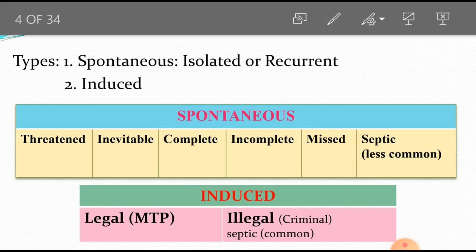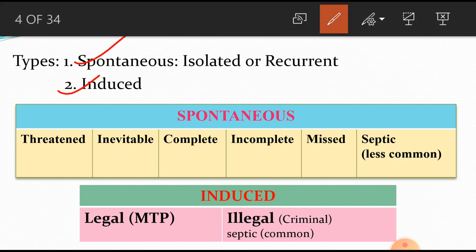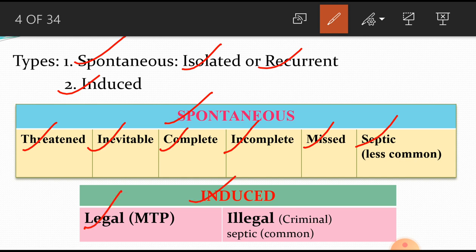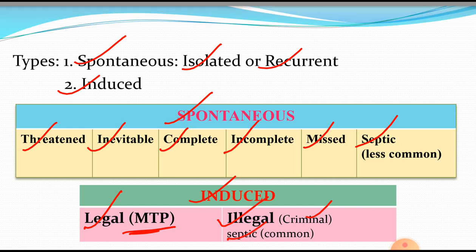Types of abortion: two types are spontaneous abortion and induced. Spontaneous abortion can be isolated or recurrent. Spontaneous abortion subtypes are: threatened abortion, inevitable, complete, incomplete, missed, and septic abortion. Induced abortion is of two types: legal — medical termination of pregnancy — or illegal, which is a criminal type of abortion. Generally, illegal induced abortion can convert into septic abortion in maximum cases.